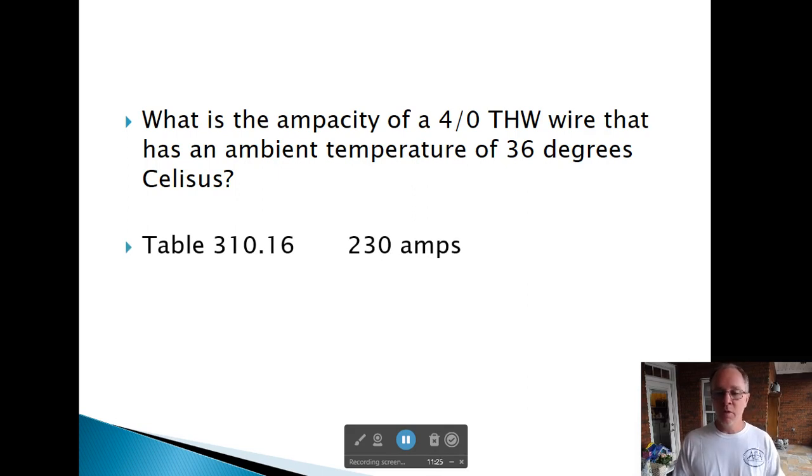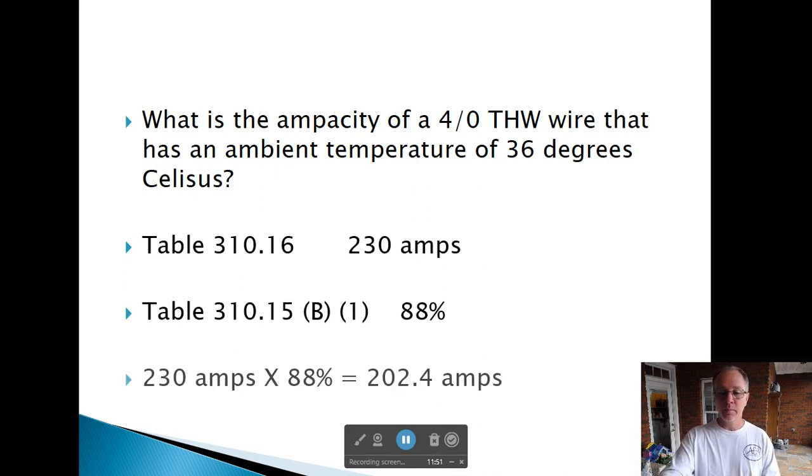Hopefully you're back and hopefully you got your answer. Table 310-16 says 4-Aught THW copper has an ampacity of 230 amps. Table 310-15-B1 says we're going to multiply times 88%. So I got 202.4 amps, so 203 amps. It's going to be a 200 amp wire. Hopefully you got that one right.